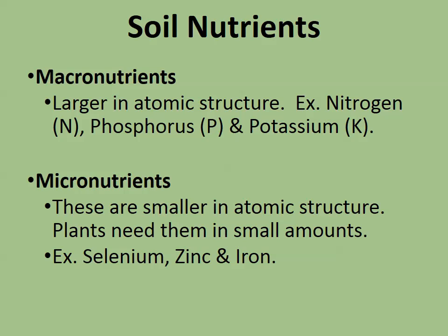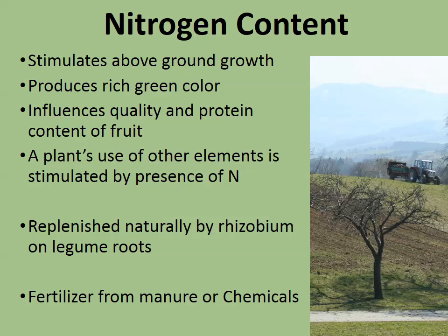Soil macronutrients are larger in atomic structure — your nitrogen, phosphorus, and potassium. Those are the three main soil nutrients used in fertilizer. Micronutrients are smaller: selenium, zinc, iron, sulfur — plants still need these, but in much smaller amounts. Nitrogen is responsible for the greenness in your plant and stimulates above-ground growth. It influences the quality and protein content of fruit, and if nitrogen isn't there, the plant often can't take up other elements.